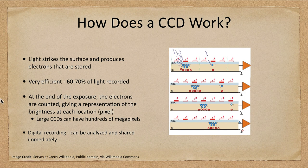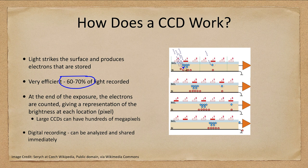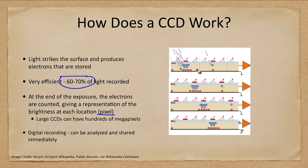So how does the CCD work? They're very efficient — 60 to 70 percent of the light is recorded. Essentially the light strikes the surface and produces electrons, and those electrons are stored in little counters. At the end of the exposure the electrons are counted. The more electrons, the more light that hit that specific pixel — that would be a brighter area. Those with very few electrons would be the darker area. You then read them out electronically to find out how many electrons you had.